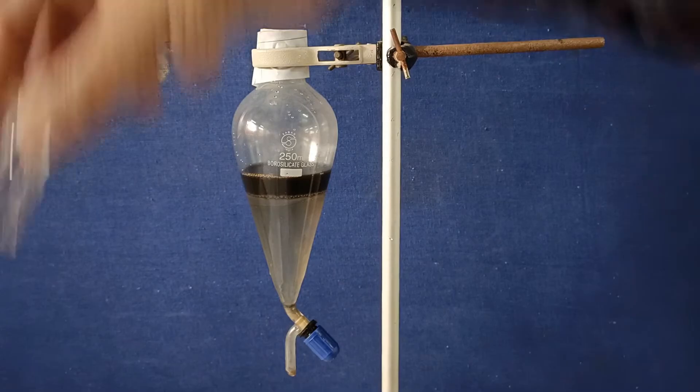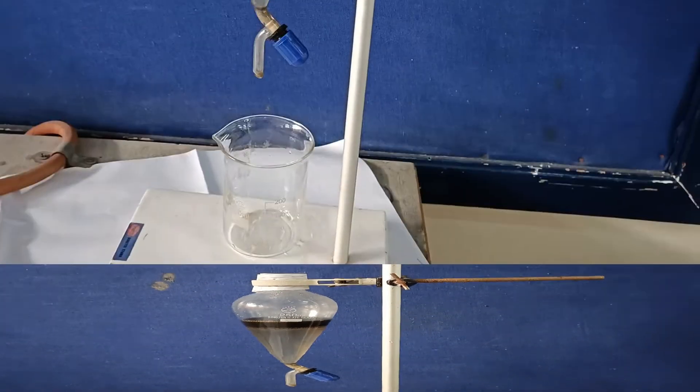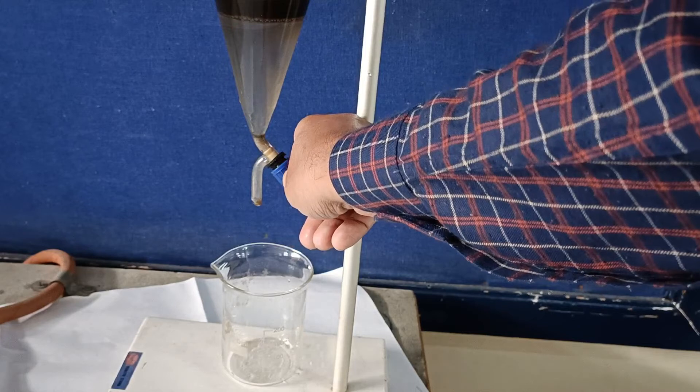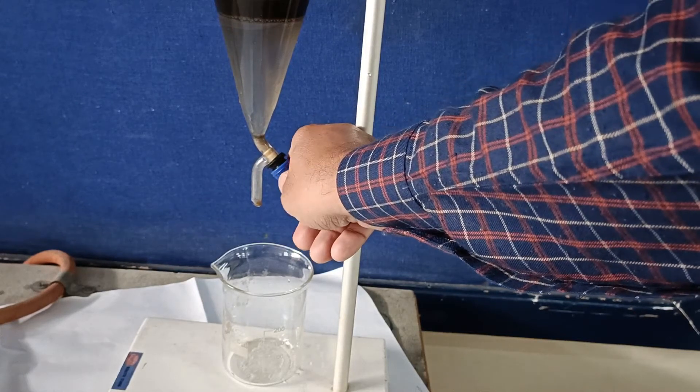Open the knob of the separating funnel. Opening the stopcock, the denser liquid comes out from the bottom part of the separating funnel into the beaker.